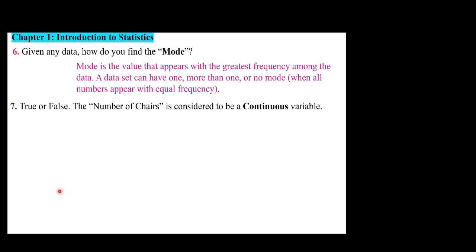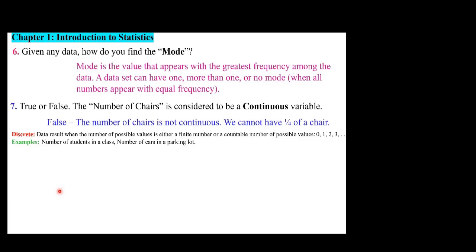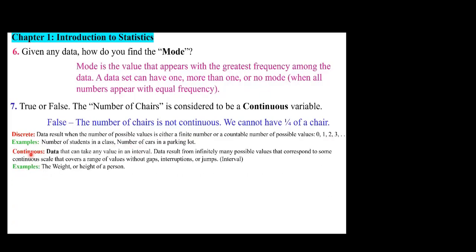The number of chairs is considered to be continuous — that is a false statement. The number of chairs is not continuous; we cannot have one-fourth of a chair. Discrete data result when the number of possible values is either finite or countable, such as 0, 1, 2, 3 — for example, number of students in a class or cars in a parking lot. Continuous data can take any value in an interval, resulting from infinitely many possible values on a continuous scale with no gaps or interruptions — such as the weight or height of a person.